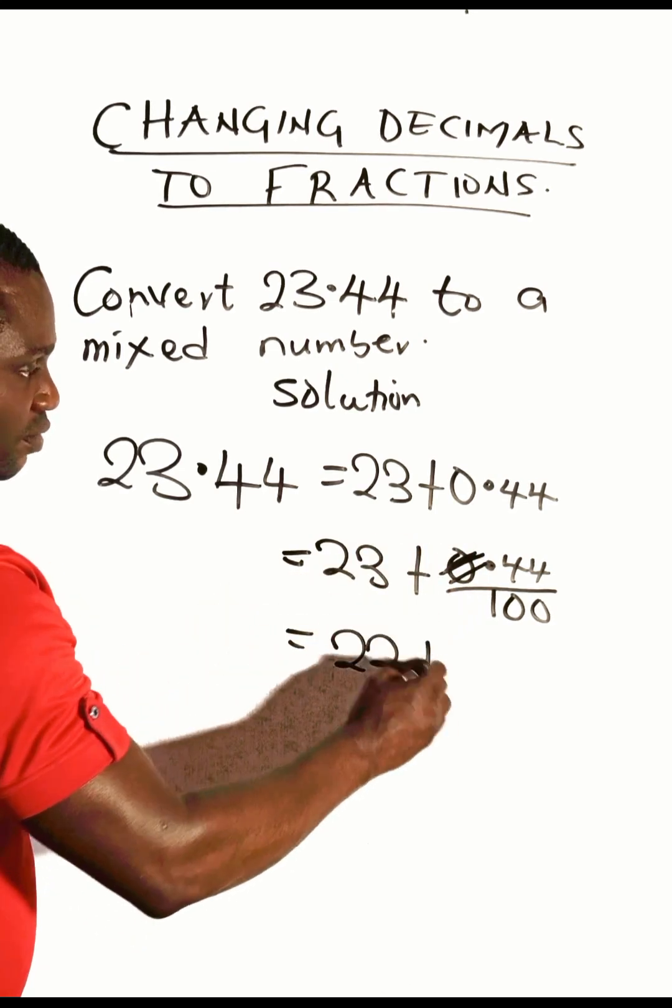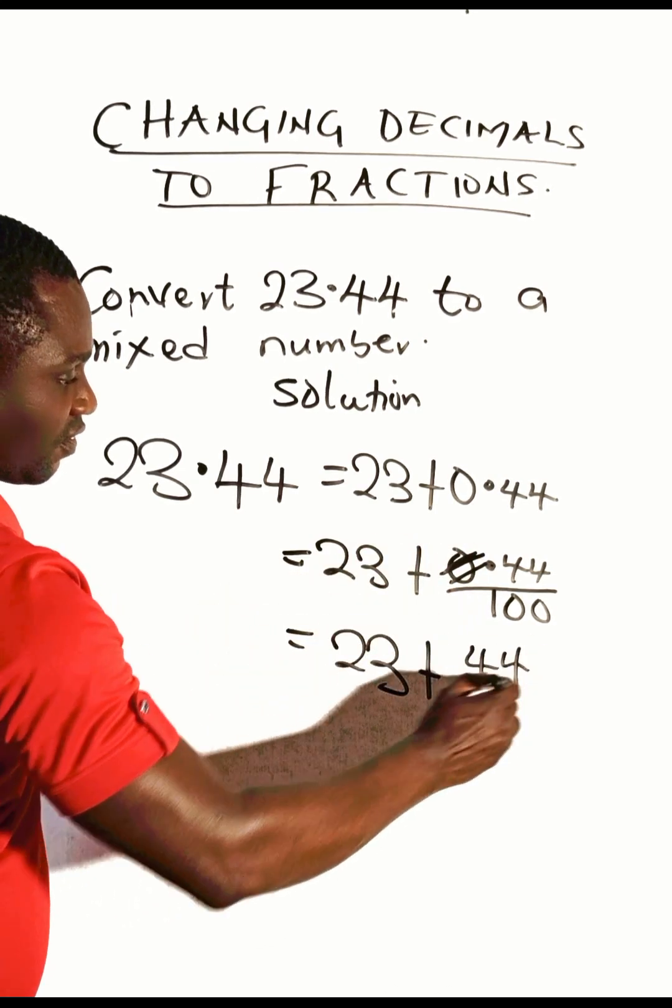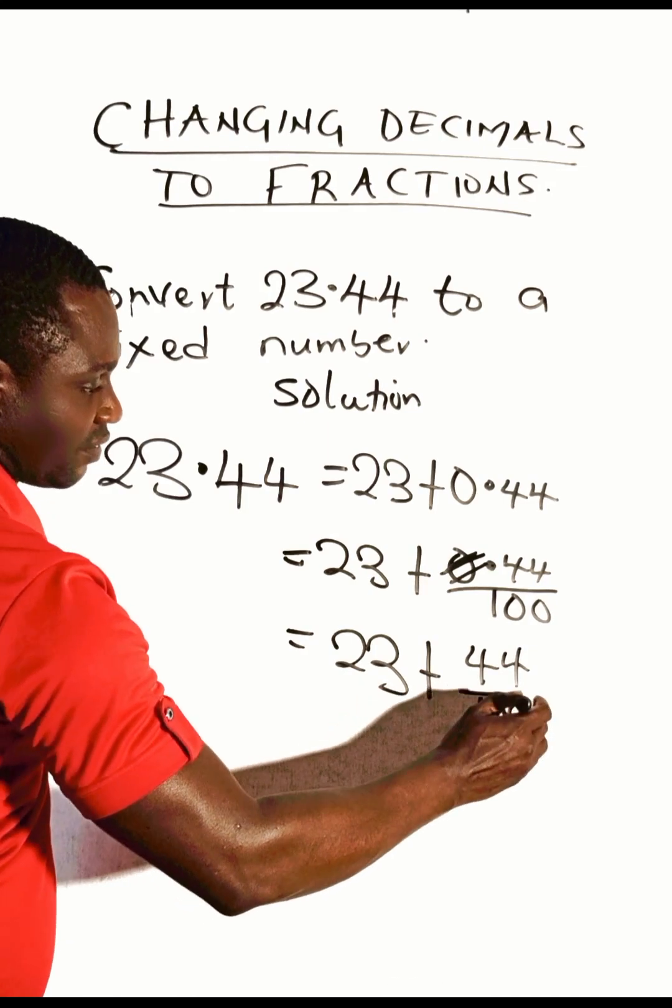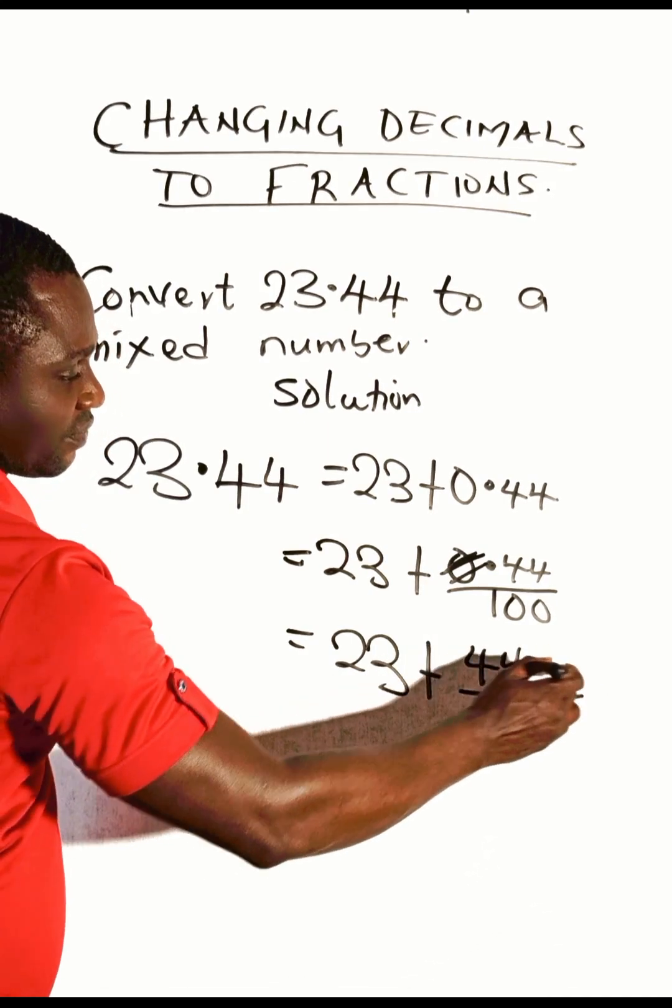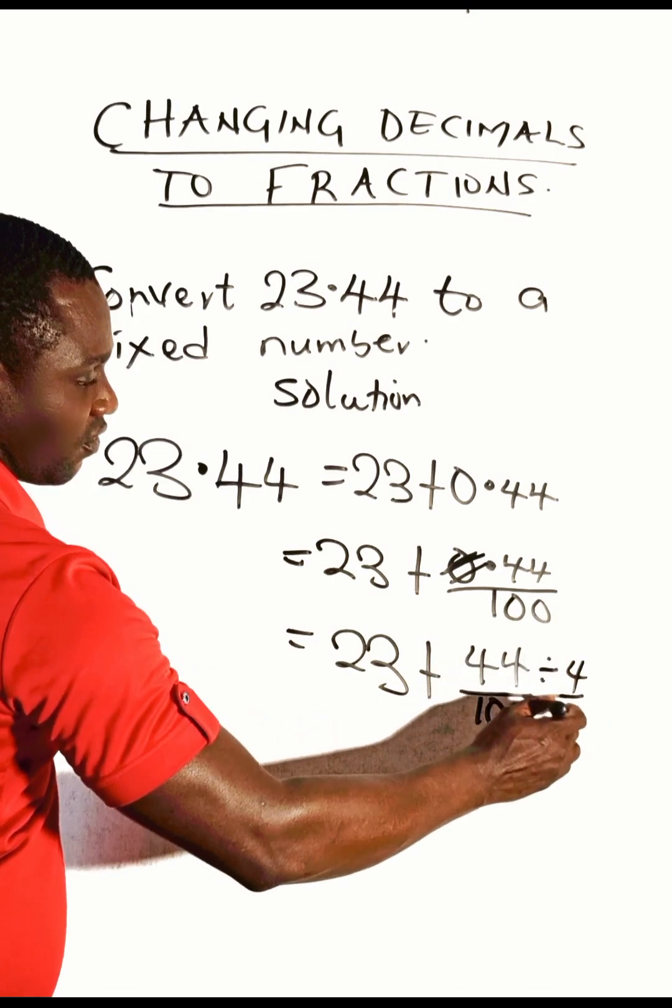23 plus 44 over 100. Of course, a number can divide 44 and 100. Let's use 4.